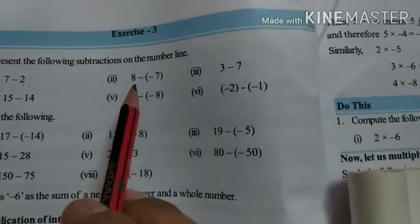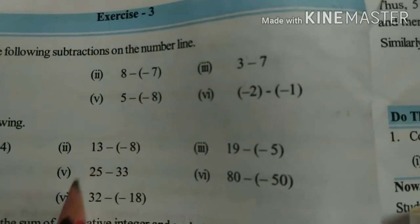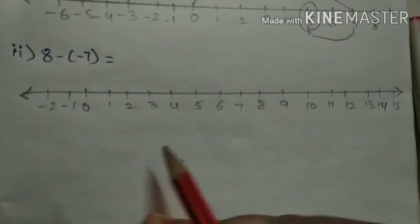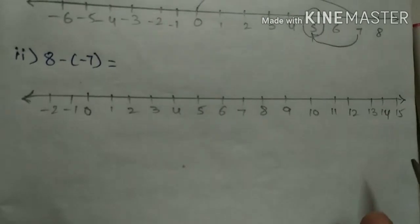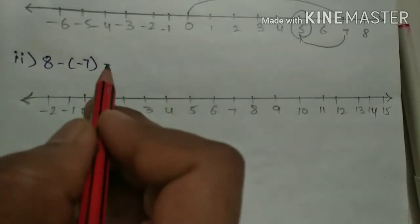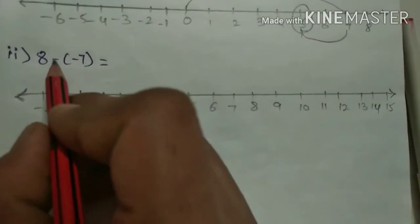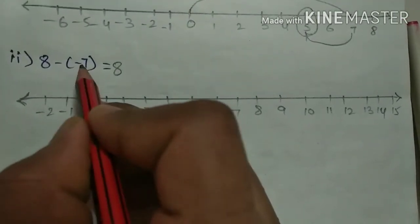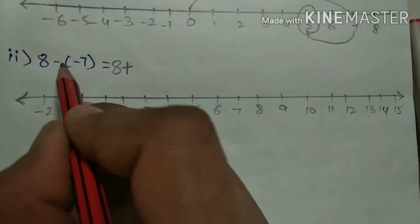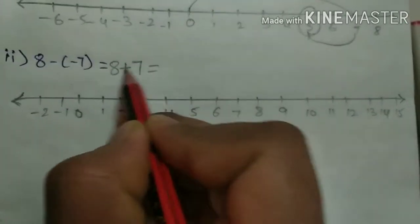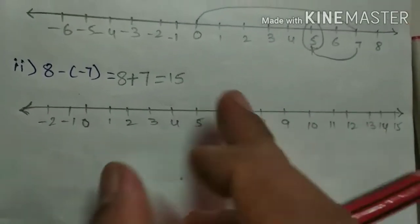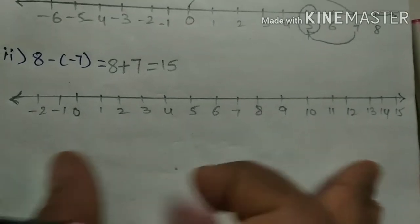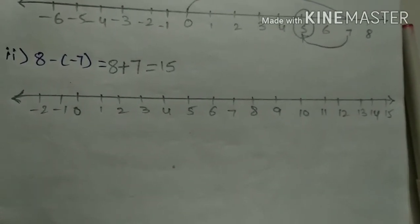Next, second one: 8 minus of minus 7. See here — draw a number line. Write 8 as it is. And minus of minus — minus into minus is nothing but plus. So 8 plus 7 equals 15. Up to 15, we should write on the number line. Adjust those marks and points accordingly.